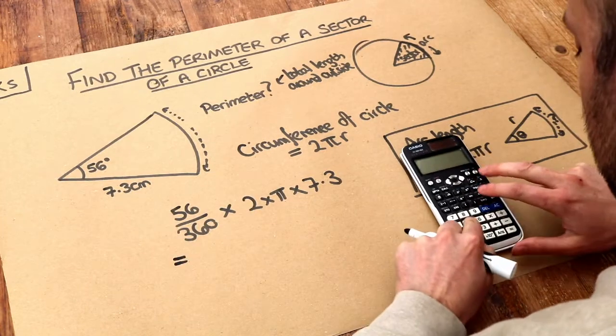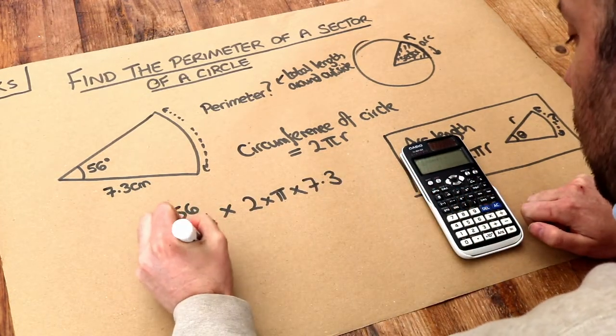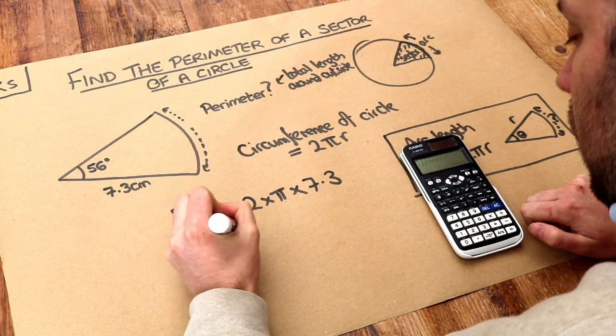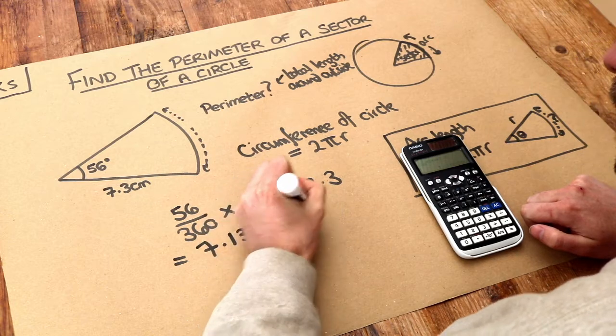So then, if we do that on our calculator, and I press the S⇔D key to convert to a decimal, I get 7.13 centimetres to 3 significant figures.